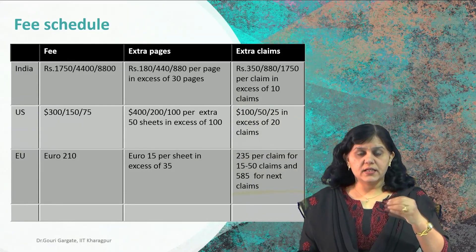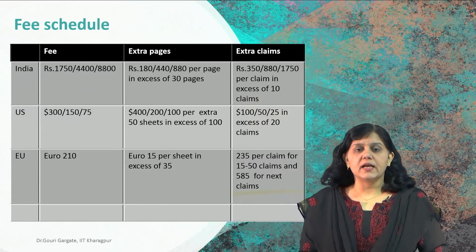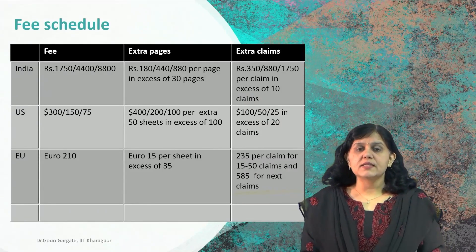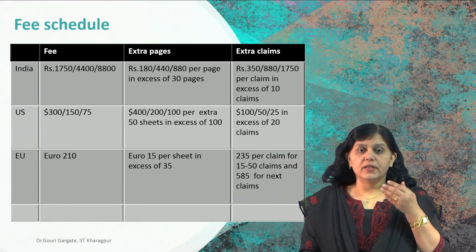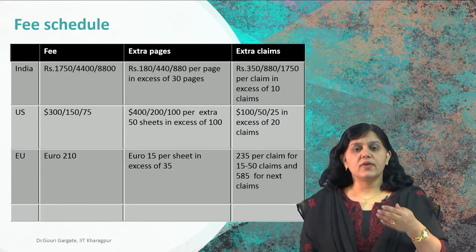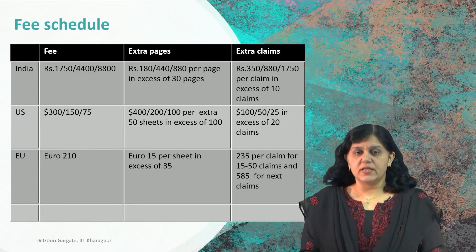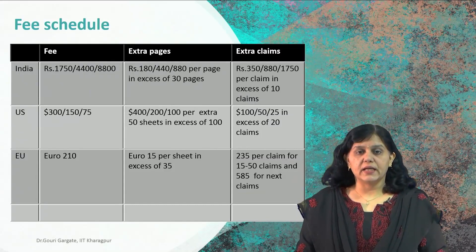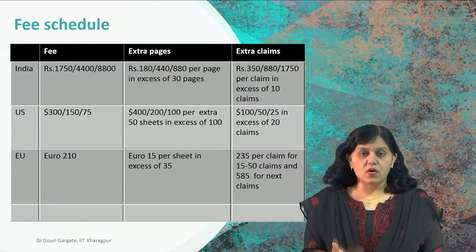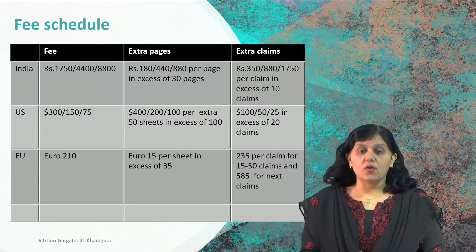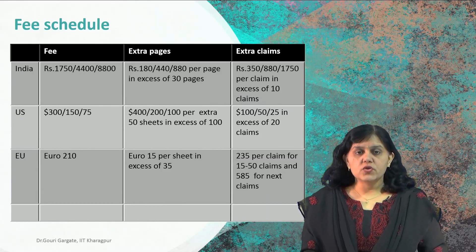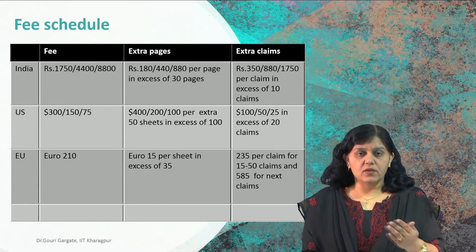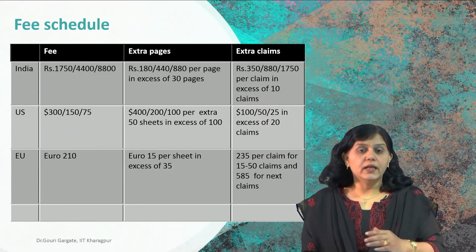The second category is small entity — that is, micro, small, and medium enterprises, or MSME. If an MSME decides on filing a patent, they have a separate fee structure. The third category is others: those who are not natural persons, those who are not coming under the category of startups, and those who are not coming under the category of small entity — all of these are considered as others. These are the three main categories when we consider patent filing in India.